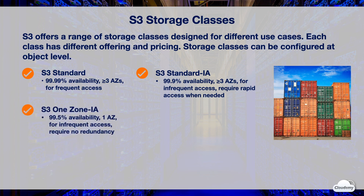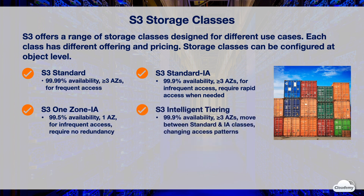S3 One Zone Infrequent Access class is designed for 99.5% availability. Data is only stored in one AZ, so you can potentially lose data in the event of one zone destruction. It's recommended for infrequently accessed data that requires no redundancy. S3 Intelligent Tiering is designed for 99.9% availability. Data is stored across at least three AZs. It automatically moves between S3 Standard and Standard IA classes, and is recommended for data with unknown or changing access patterns.